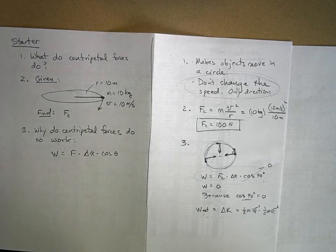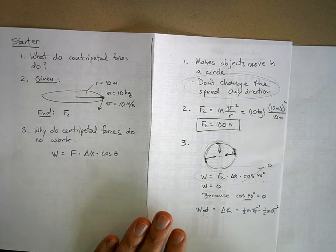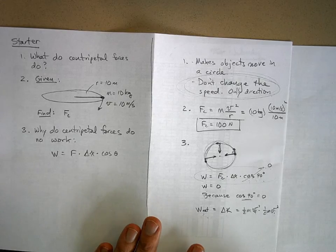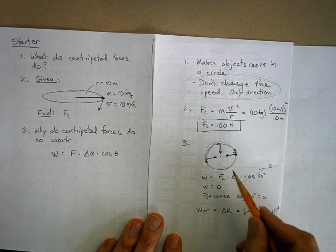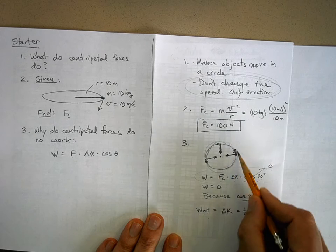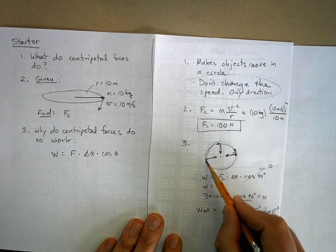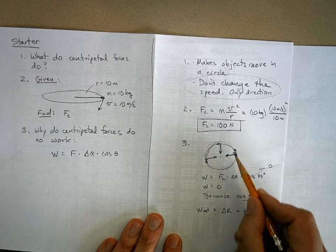Now here's another explanation, a totally different explanation. Remember the work-energy theorem: the work done by the net force is equal to a change in kinetic energy. Well, here's uniform circular motion, obviously constant speed in a circle.